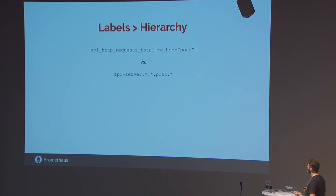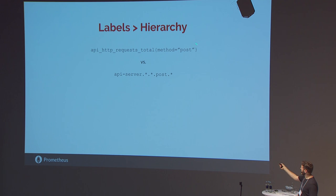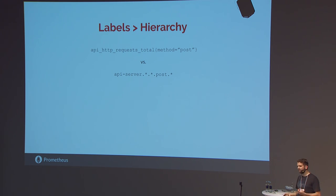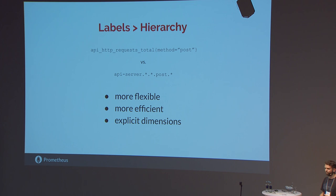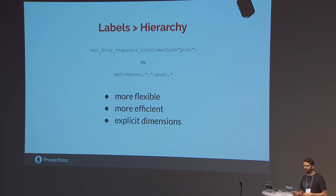You might have the total number of HTTP requests in the system, keyed by path, status code, and so on. If you try to encode the same data in a hierarchical model it would look like the right side — similar to what people know from Graphite. If you query for everything with method equals POST, it would look really explicit in a label-based model — you see exactly what you're selecting on and don't need to know how many other path components there are or implicitly know which component means what.